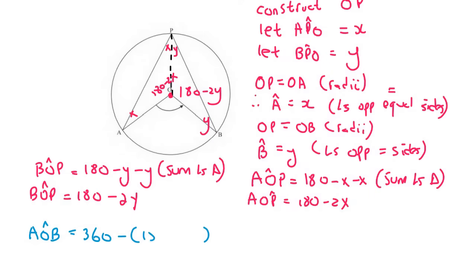So angle AOP is equal to 360 minus, then in brackets, 180 minus 2Y minus, in brackets, 180 minus 2X. And that's just because of angles around a point.